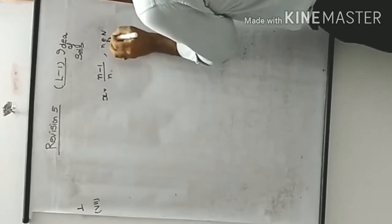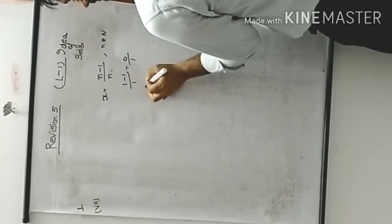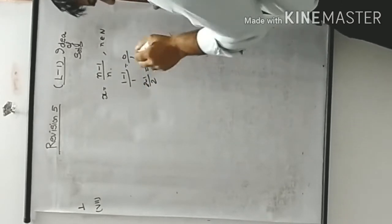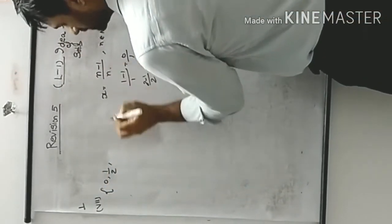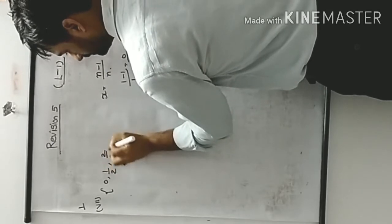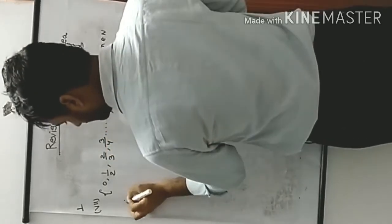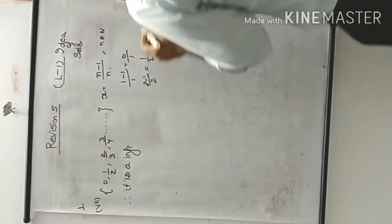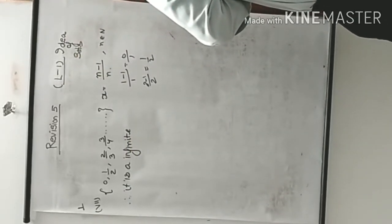The set is x = (n-1)/n, where n ∈ N. The first natural number gives 0/1 = 0. Next: (2-1)/2 = 1/2. Then 2/3, then 3/4, and so on. There is no limit given, so elements keep coming. Therefore, it is an infinite set.